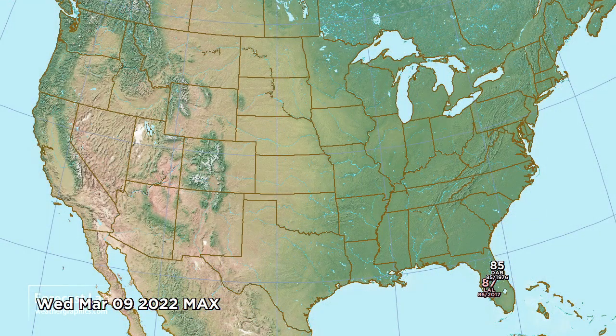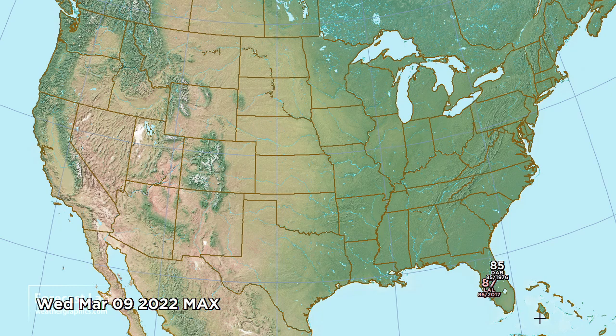Let's take a look at those temperature records for this afternoon. The warmth is back in Florida — 87 degrees, breaking a record there at Lakeland, and 85, tying the record at Daytona Beach.